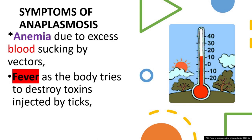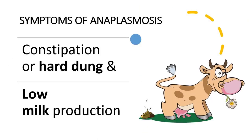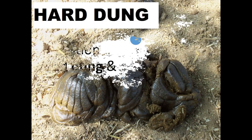Symptoms of anaplasmosis: anemia due to excess blood sucking by vectors; fever as the body tries to destroy toxins injected by ticks; and constipation or hard dung, and low milk production.